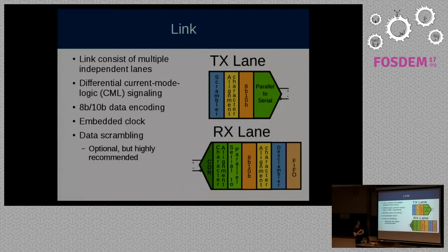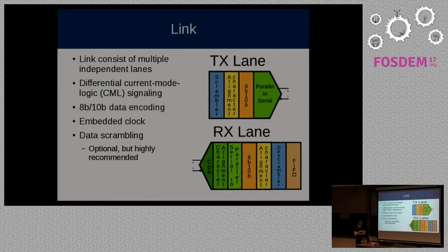A link consists of multiple independent lanes. At the physical level it uses differential current mode logic — similar to LVDS but higher power to handle high speeds — with an embedded clock rather than a separate one, eliminating clock-to-data matching problems. Data scrambling is optional but highly recommended: without it, data patterns can create spurs that appear in your actual output. The CDR also expects scrambling to be enabled.